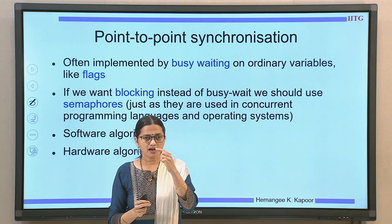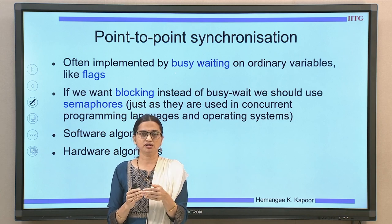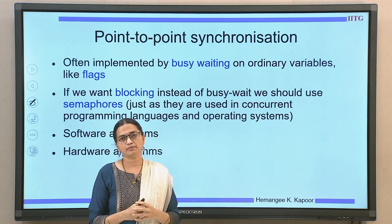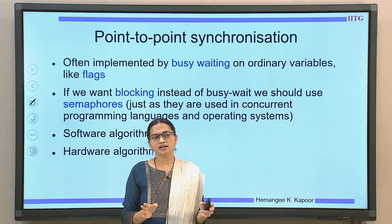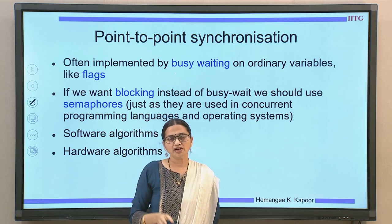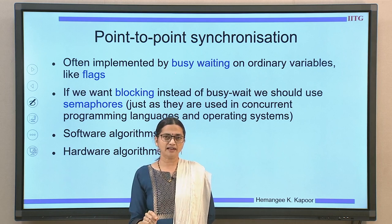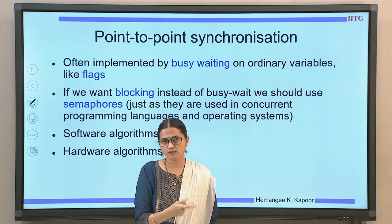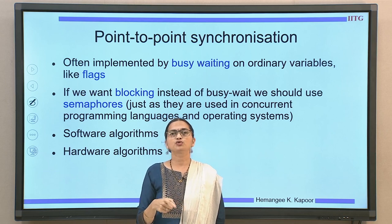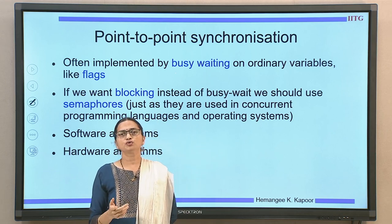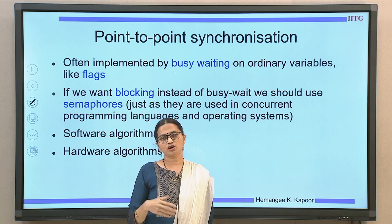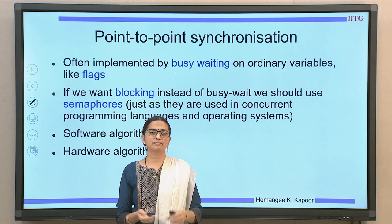When the producer process finishes production, it sends an event to the other process, triggering that process to consume the variable. This is normally established using either busy waiting — the consumer process keeps waiting on a flag. So the producer produces a variable, sets a flag, and the consumer waits for this flag to become one. When the flag becomes one, it consumes the data item. If you do not want busy waiting because it consumes unnecessary processor power, you can use semaphores.